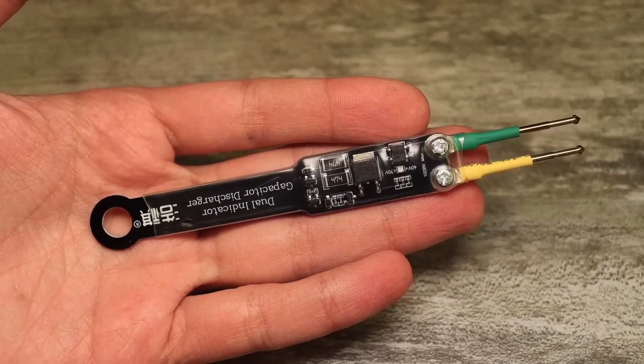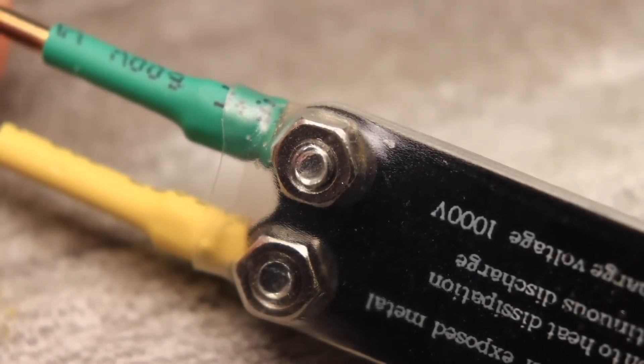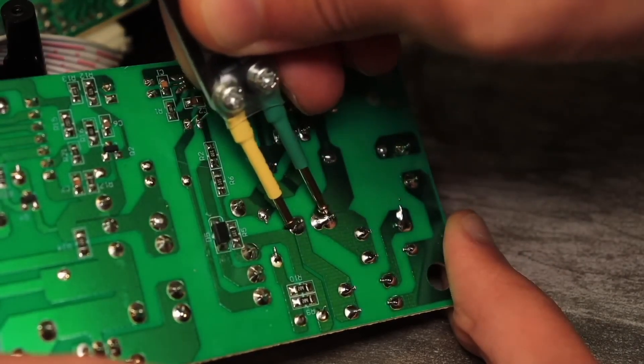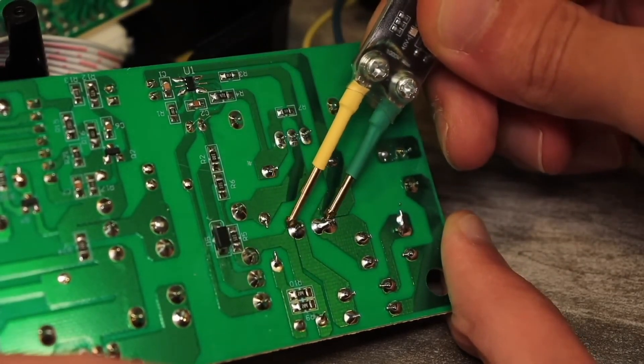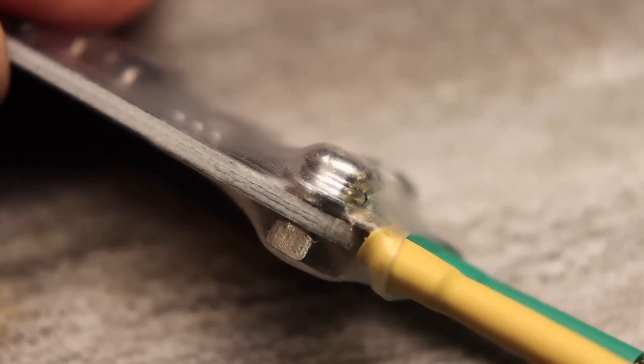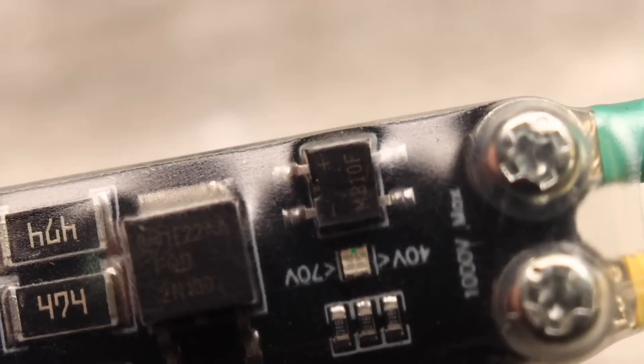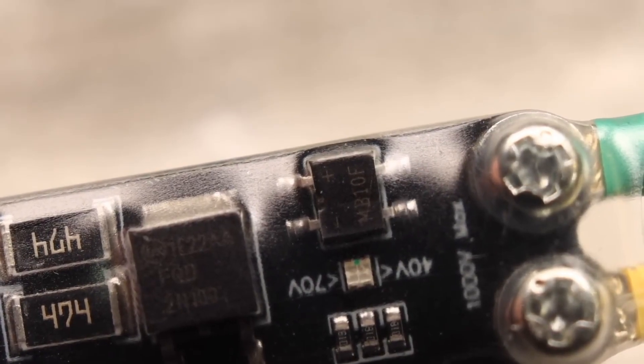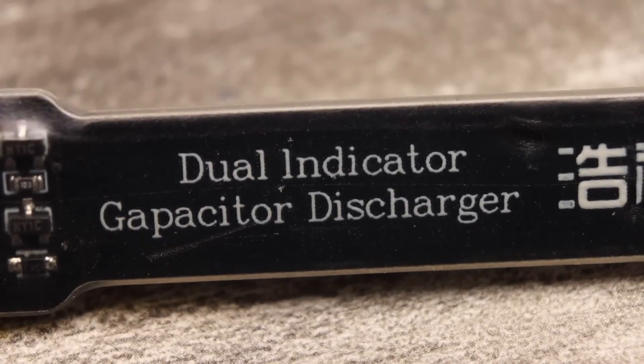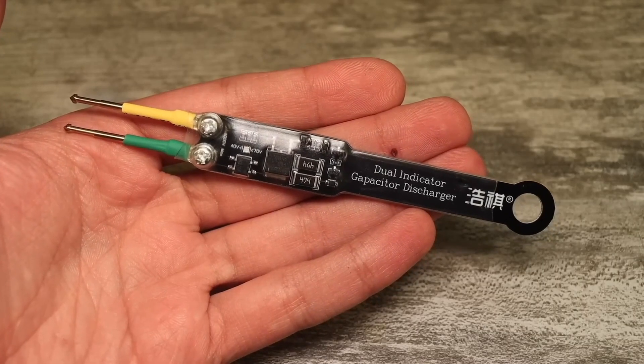The probes are adjustable. You can loosen them and set any angle you want. Thanks to the fact that they're spring-loaded, you can easily adjust the angle of attack. Regarding safety, the circuit is insulated with heat shrink tubing. In theory, that should be enough, but it's better to add another couple of layers of heat shrink, or put the device in some kind of plastic case and make a window for the indicator, or even choose a transparent case altogether.